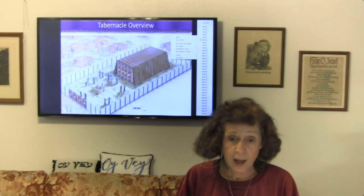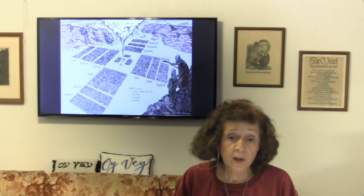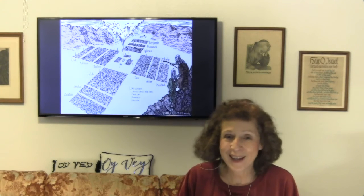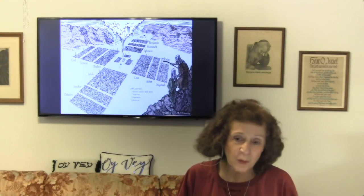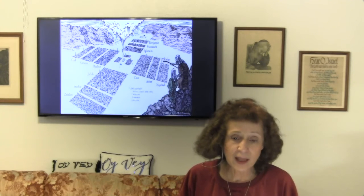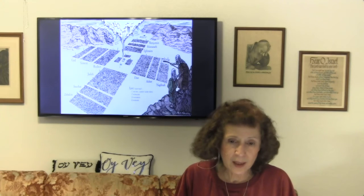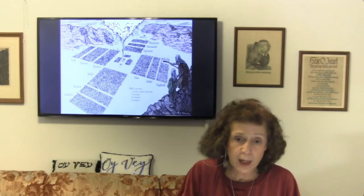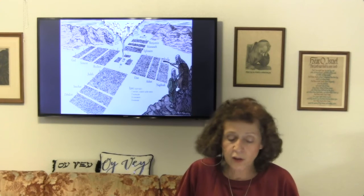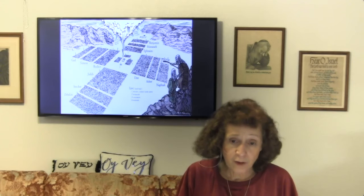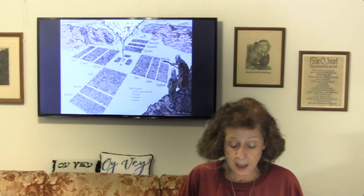As we look around our tabernacle we again see the form of a cross. Three tribes were parked on each side — north, south, east, and west — and they formed a cross. The Levitical tribe was in the middle, going all the way around the tabernacle on all four sides. If you wonder how they got 12 tribes, Ephraim and Manasseh were both counted as tribes, and that brought the number back up to 12.